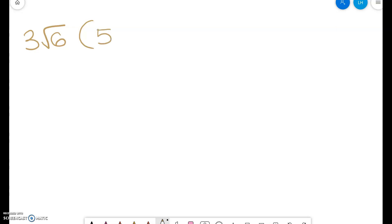So let's say I did 3 square root of 6 times 5 plus 2 square roots of 3. So when I distribute, how do I multiply 3 square roots of 6 times 5?